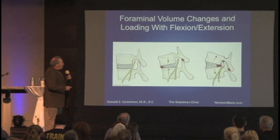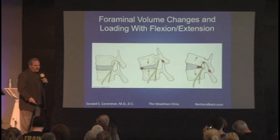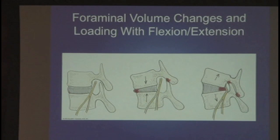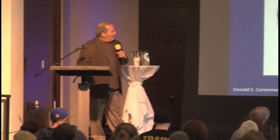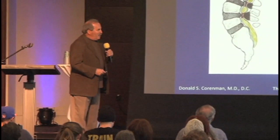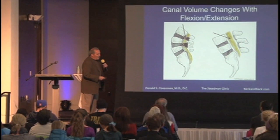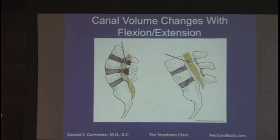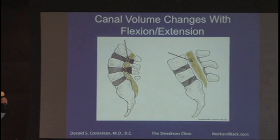What happens with flexion and extension to the nerve hole? When you flex forward, the nerve hole opens. When you bend backward, it closes. So if somebody comes in with leg pain and they don't like standing but they like bending forward, they may have foraminal stenosis or lateral recess stenosis. Similarly, what happens to the spinal canal when you bend forward versus backward? Flexion opens the canal, extension closes it. If somebody has a narrowed spinal canal and stands up getting buttocks and leg pain — neurogenic claudication — then bends forward or sits and feels better, you have a diagnosis almost just by asking simple questions.